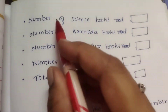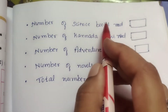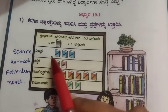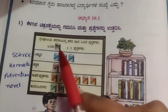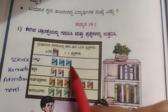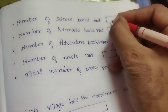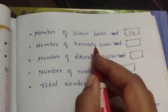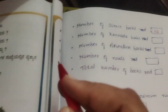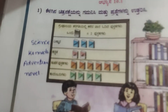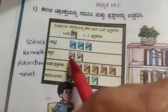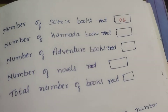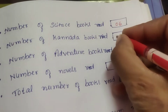First: Number of science books read. There are 3 pictures for science books, and 1 picture equals 2 books, so 3 times 2 equals 6 science books. Number of Kannada books read: 2 pictures, so 2 times 2 equals 4 Kannada books.